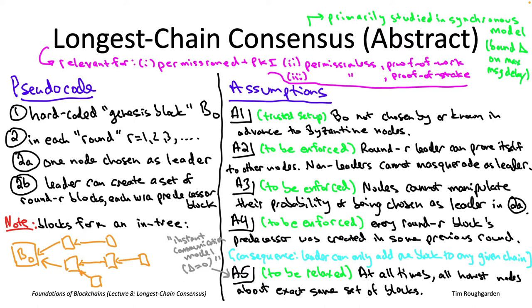You should object to this assumption. One objection is that it's not realistic — delta is not zero. A more powerful objection is: wasn't the whole point of state machine replication to keep nodes in sync? Doesn't this completely trivialize that hard problem? There's still liveness, but consistency seems trivialized if we just assume all nodes stay in sync.